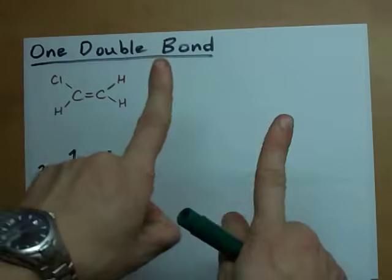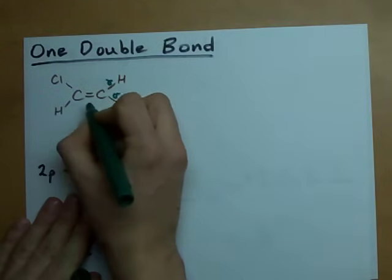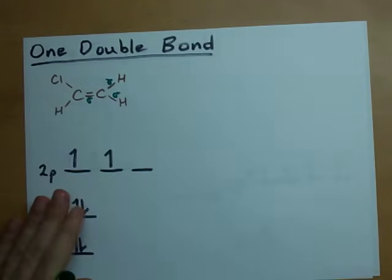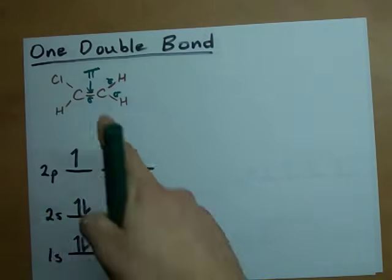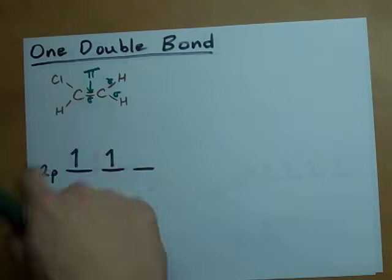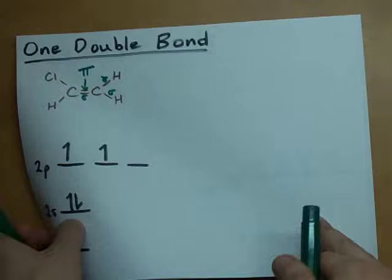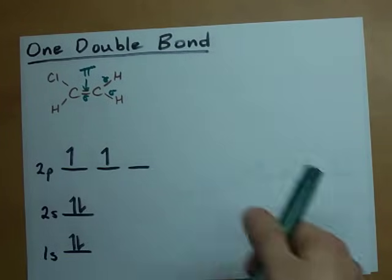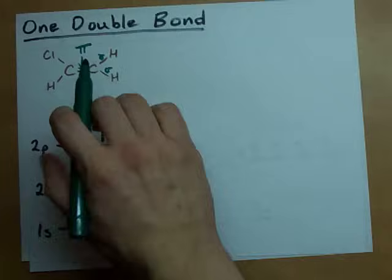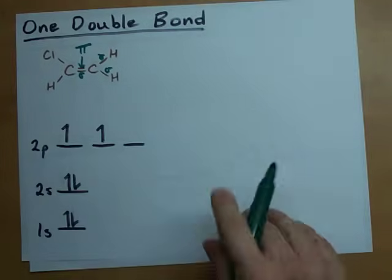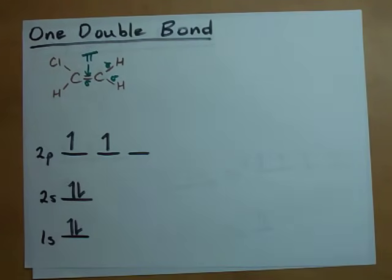When a carbon makes a double bond, however, it makes 1, 2, 3 sigma bonds and 1 pi bond. The pi bond is the second bond. This is just an example molecule. It could be any molecule that has a double bond in it like the one I showed you before. 1, 2, 3 hybridized orbitals are needed and 1 p orbital needs to be left over.